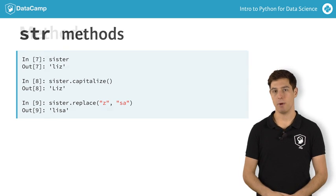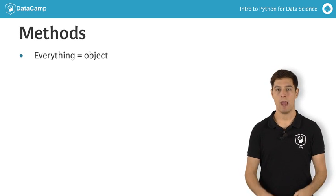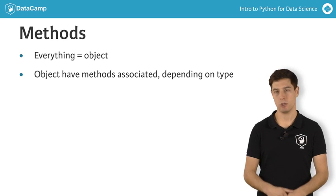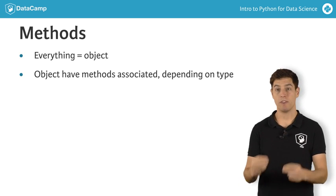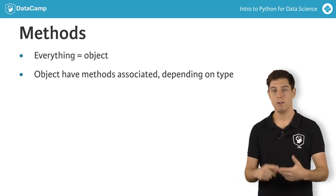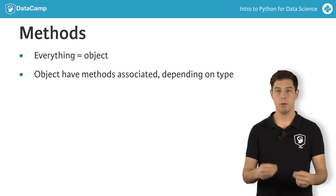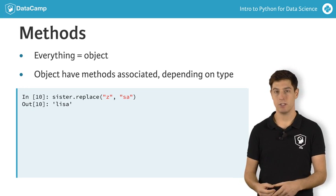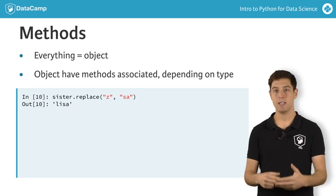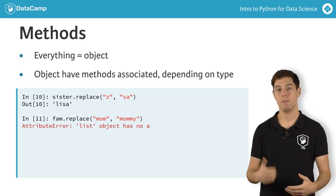I guess it's clear by now. In Python, everything is an object, and each object has specific methods associated. Depending on the type of the object, list, string, float, whatever, the available methods are different. A string object like sister has a replace method, but a list like fam doesn't have this, as you can see from this error.